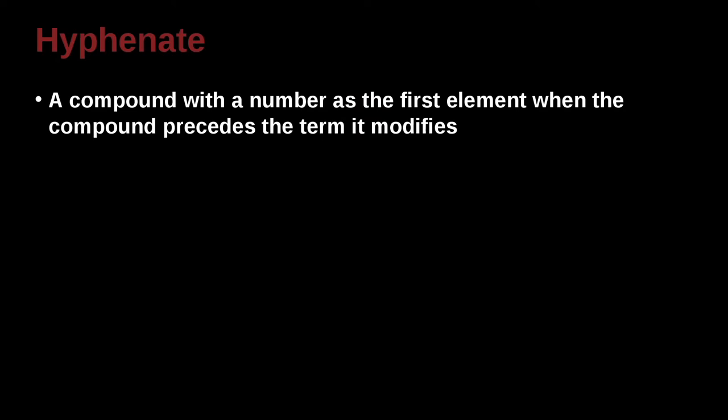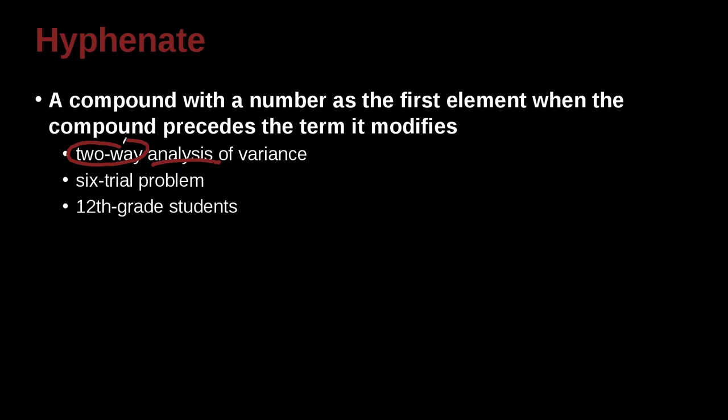You can hyphenate compounds with a number as the first element when the compound precedes the term it modifies, such as two-way analysis. So this two-way, we're going to hyphenate this because normally it'd be two words, but it actually means one thing and it's preceding the term it modifies, which is analysis, and it has a number in it. Six-trial problems, 12th-grade students—who are the students? They are the students in the 12th grade, but we don't want to really separate this out and make it unclear. We want to just put it together. This is one thing. 16-s interval, where s means second.